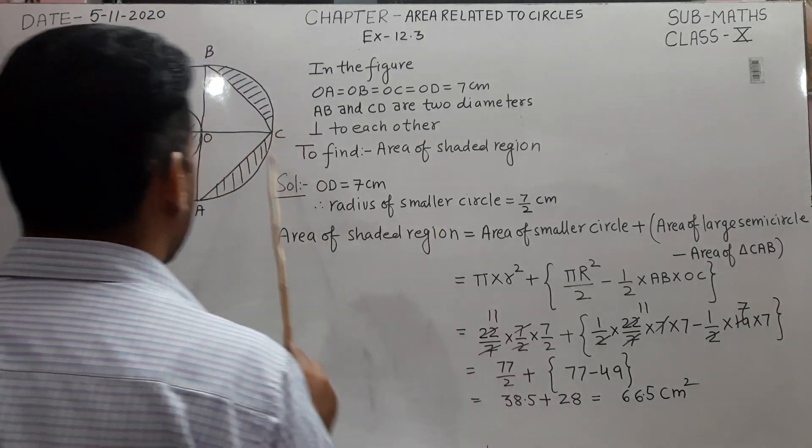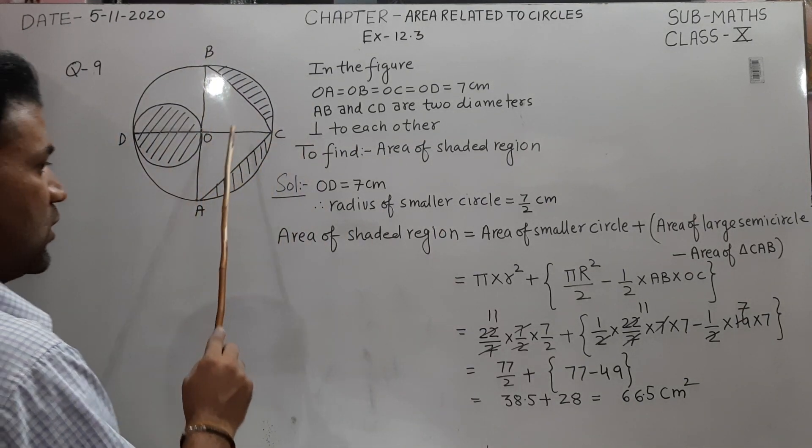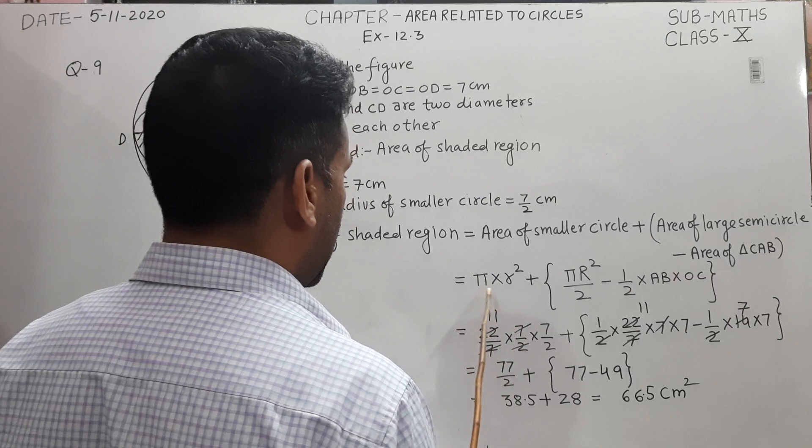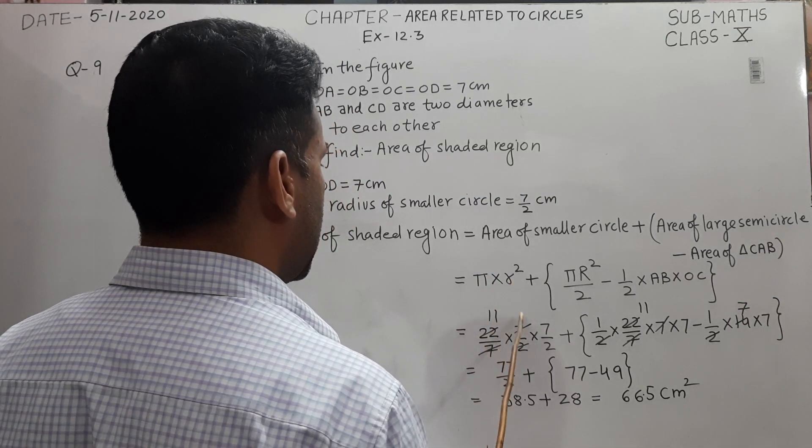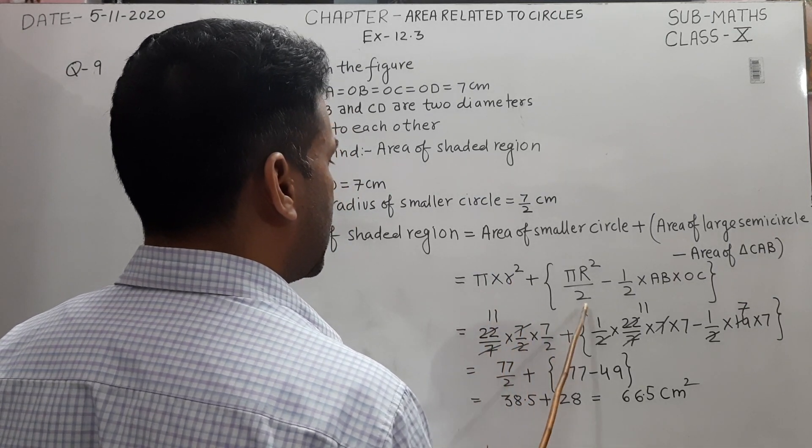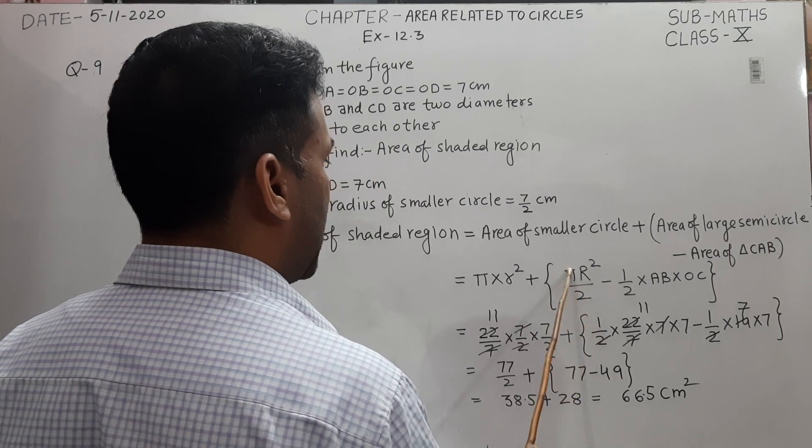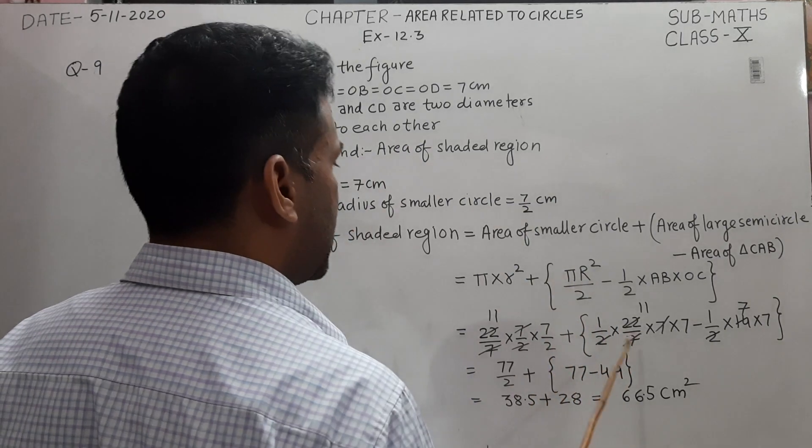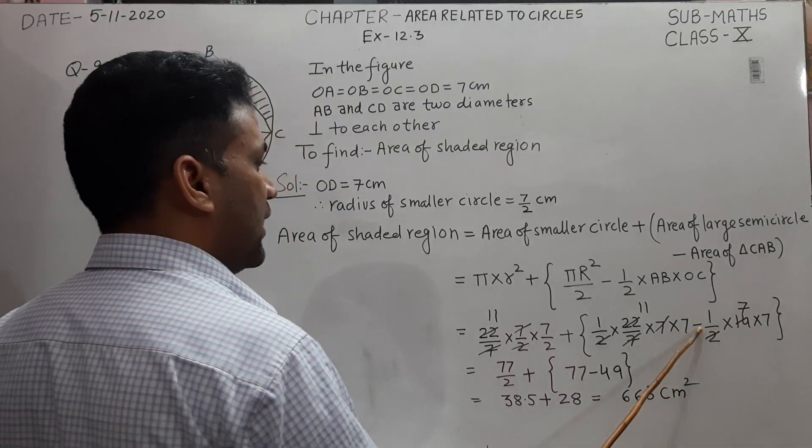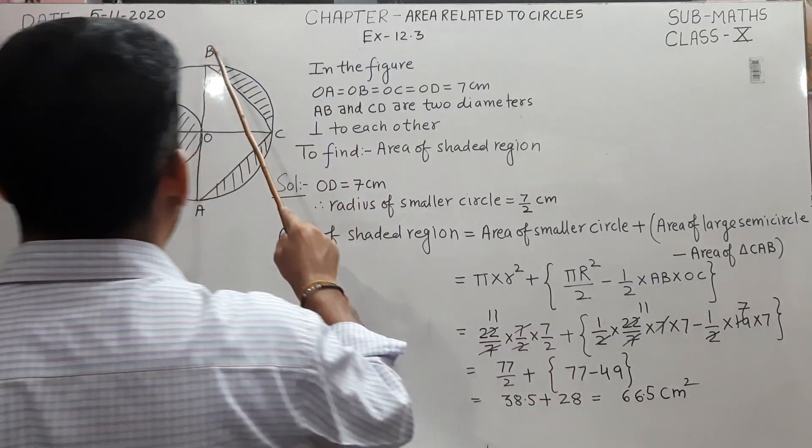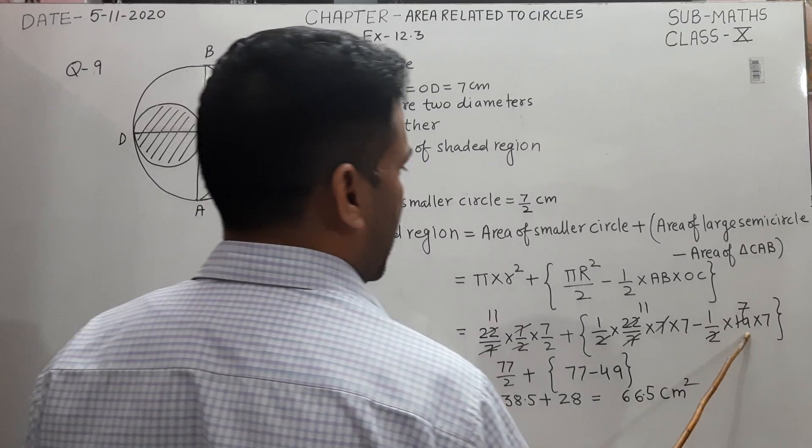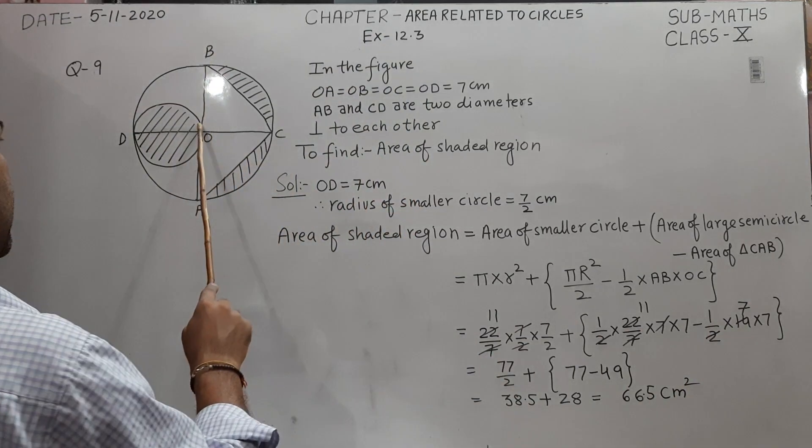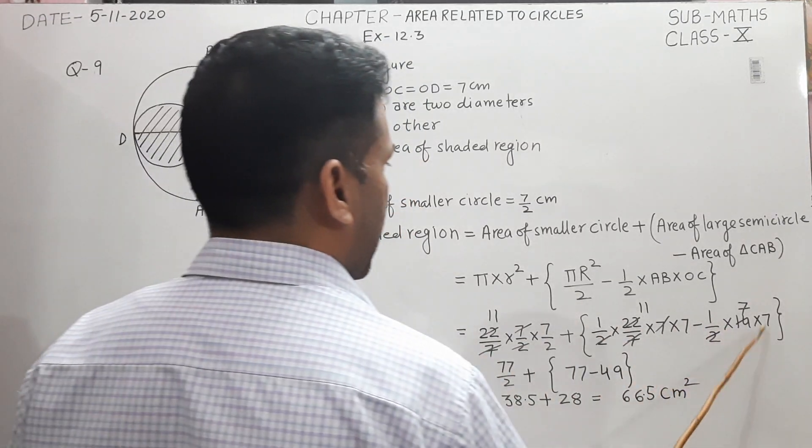Substituting π = 22/7: (22/7) × (7/2)² plus 1/2 × (22/7) × 7² (the radius of the bigger circle is 7 cm) minus 1/2 × 14 × 7. The base BA is 14 because OB is 7 and OA is 7, and height OC is 7.